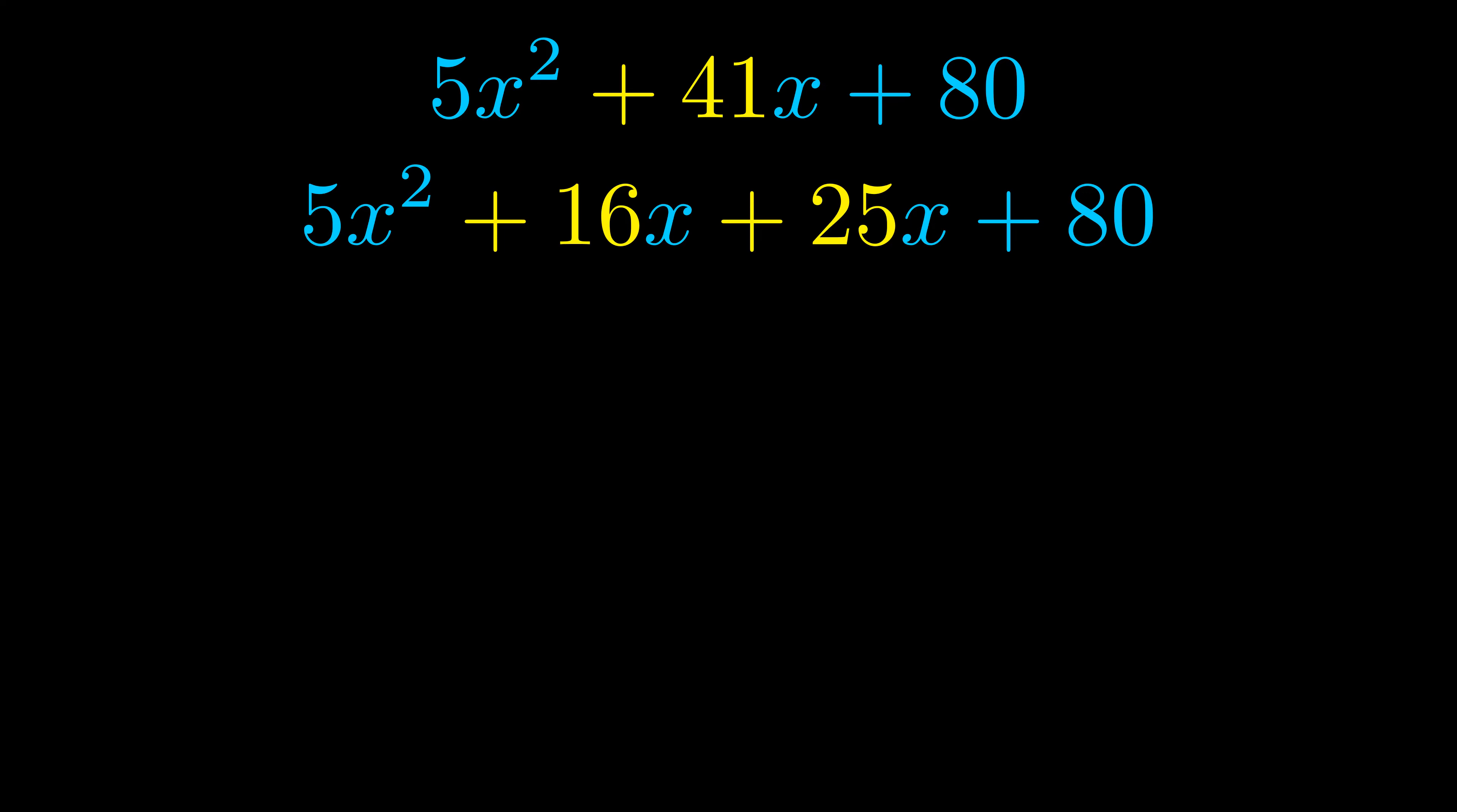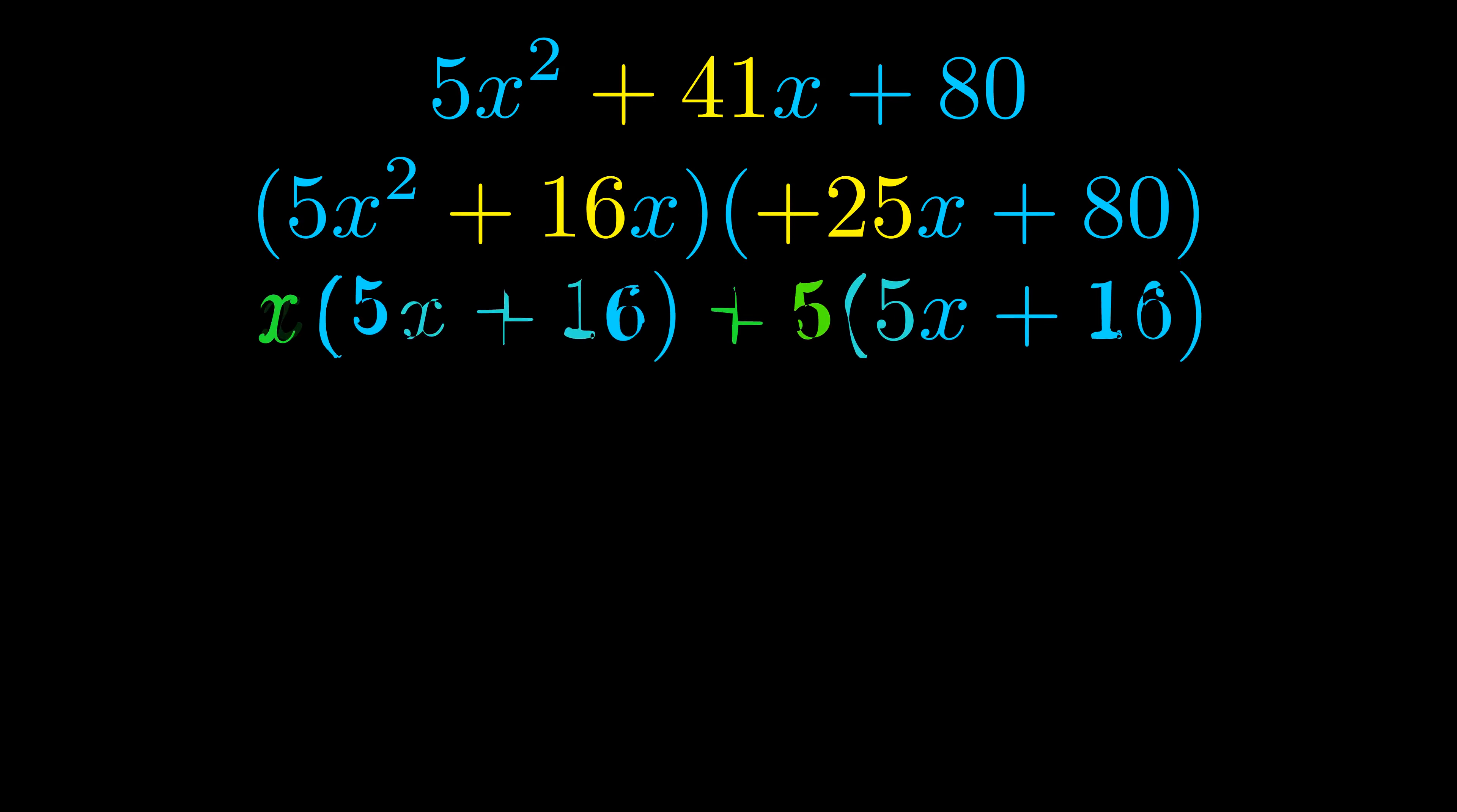Once we've done this we go ahead and we put parentheses around the first term and the last term and we do that so that we can take the greatest common factor out of both terms. We can see the greatest common factor is now outside in green.